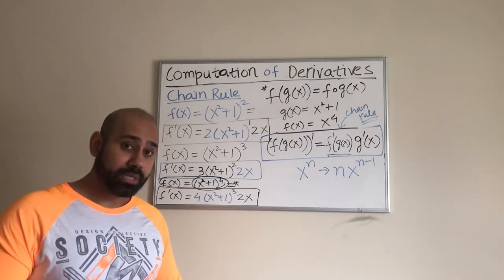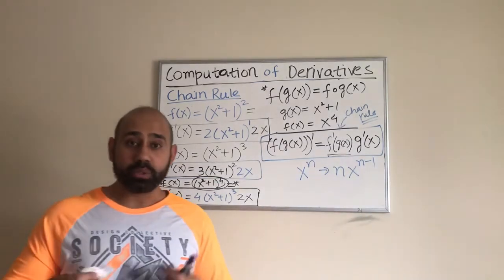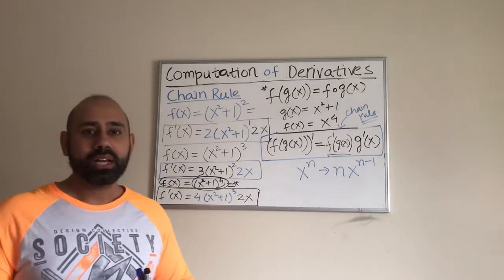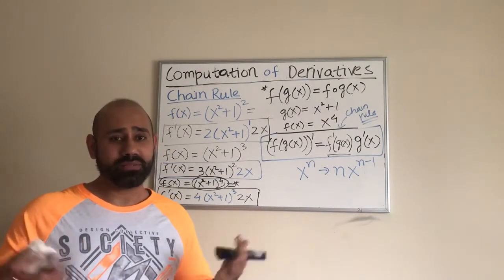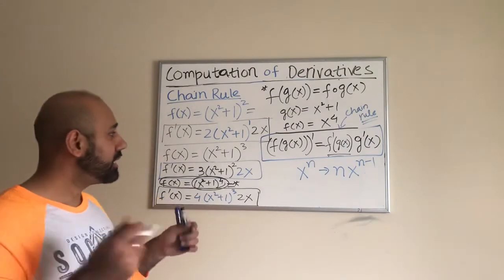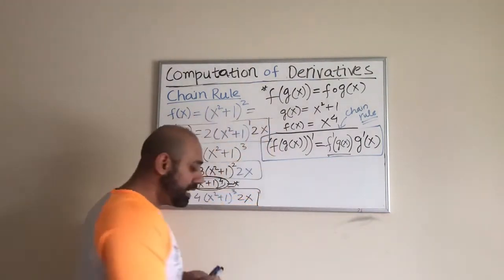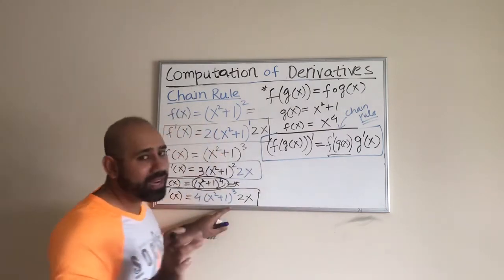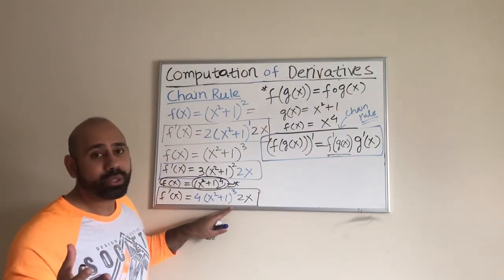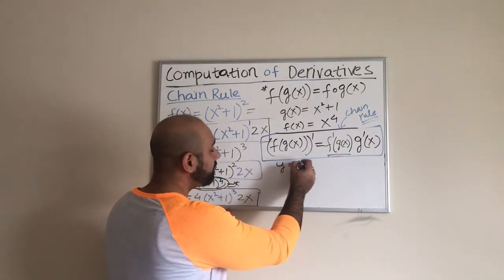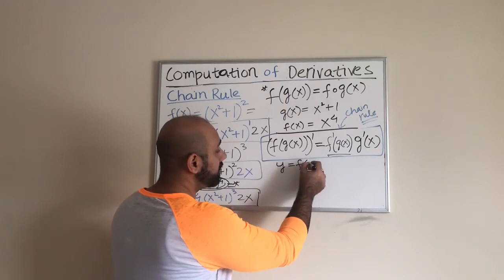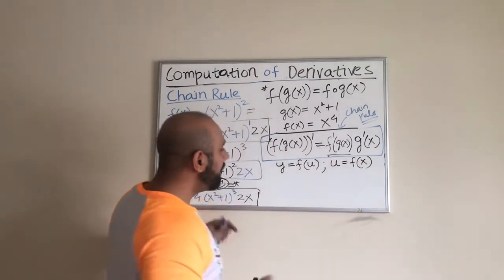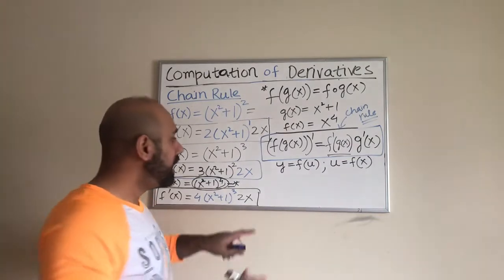This is one way of thinking about and using the chain rule. There's one more way that textbooks usually discuss, which I also like, and I'm going to show you that method as well. Then you'll have two methods to choose from. The other way of thinking about this uses dy/dx notation. With a composition of two functions — and this will also work for more than two — let's say y is a function of u, and u in turn is a function of x.